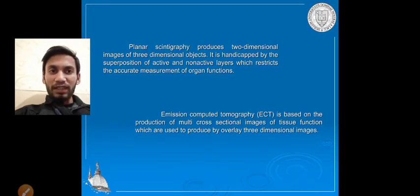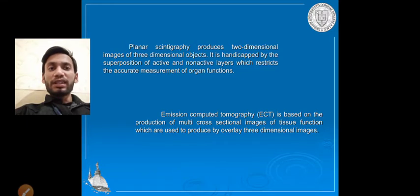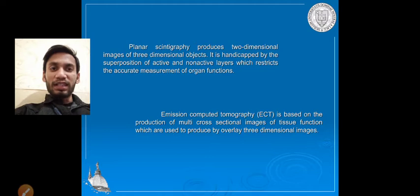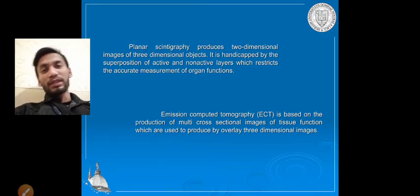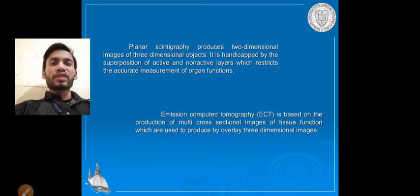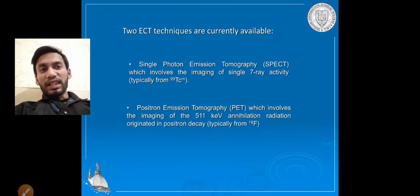Emission computed tomography takes 2D images that look like 3D images. The key difference from planar scintigraphy is: planar scintigraphy takes images of 3D objects and converts them into 2D planar images, whereas ECT reconstructs them to appear three-dimensional.